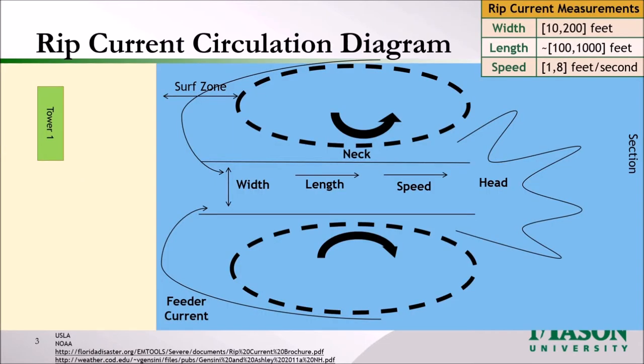Rip currents form when waves break near the shoreline. Once they break, they generate a feeder current that is moving longshore. Once the feeder current is deflected offshore, it is going to form the neck of the rip current. This is where most of the drownings happen — this is where the rip current speed and strength is very high.